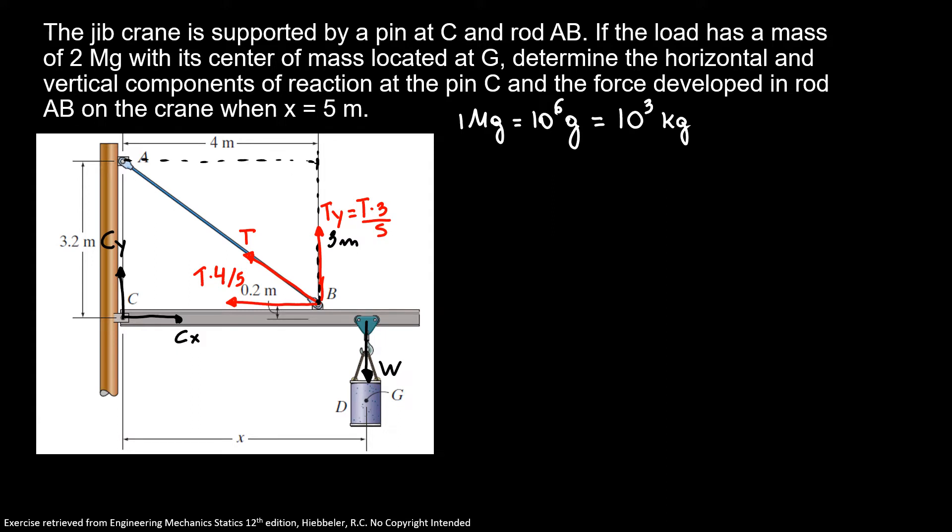The easy approach using our equations of equilibrium is the sum of the moments about C. Remember that clockwise is our positive direction. Here I will start with our weight. Minus because I'm going clockwise: 2 times 10 to the 3rd kilograms times 9.81, that's our gravity, times 5. That is the distance between point C to our weight.